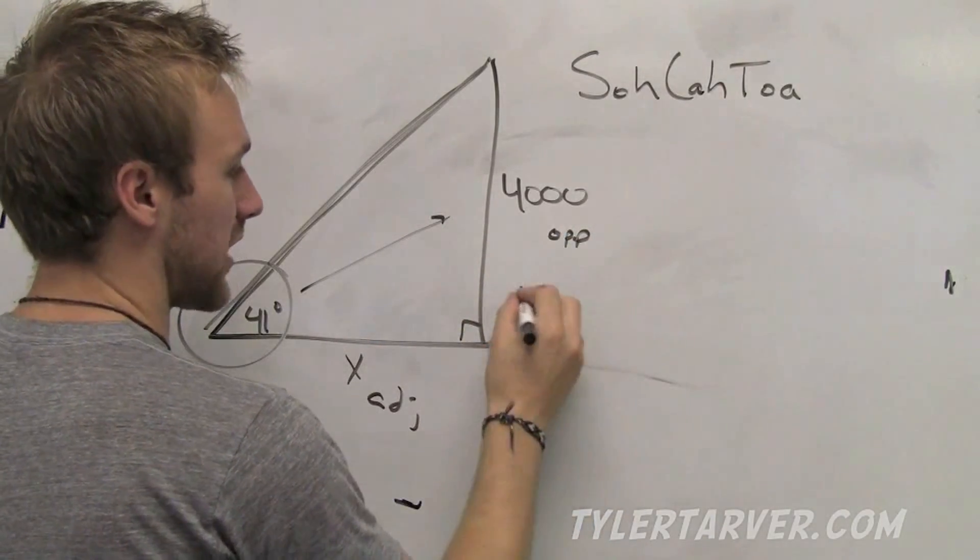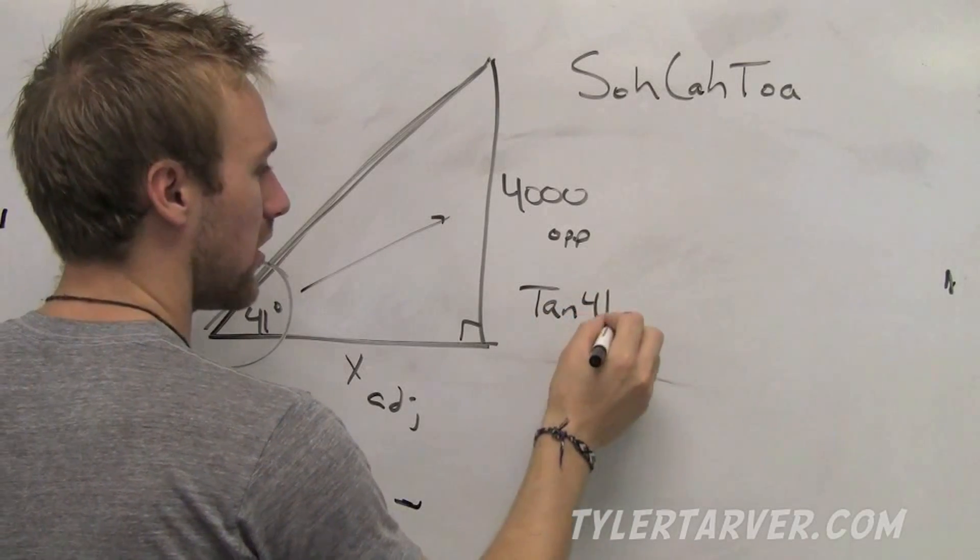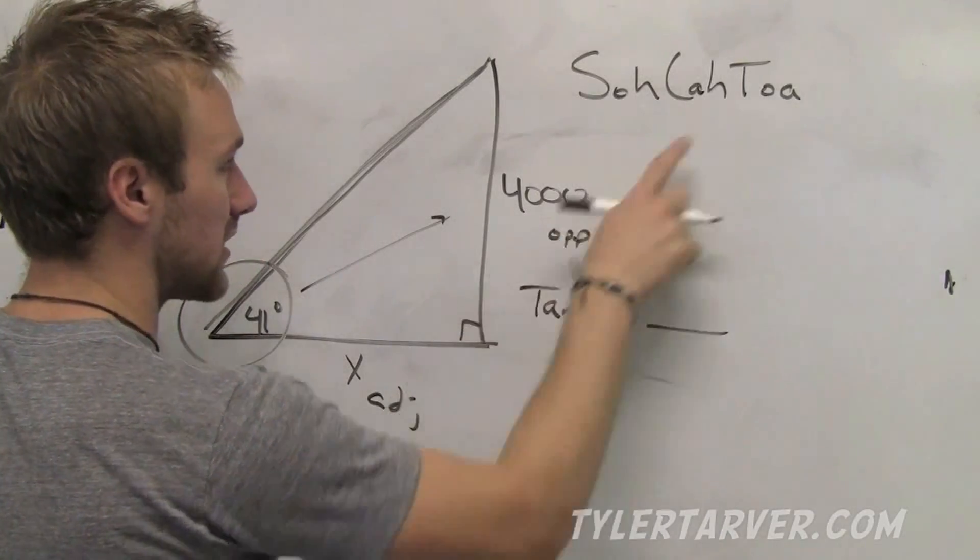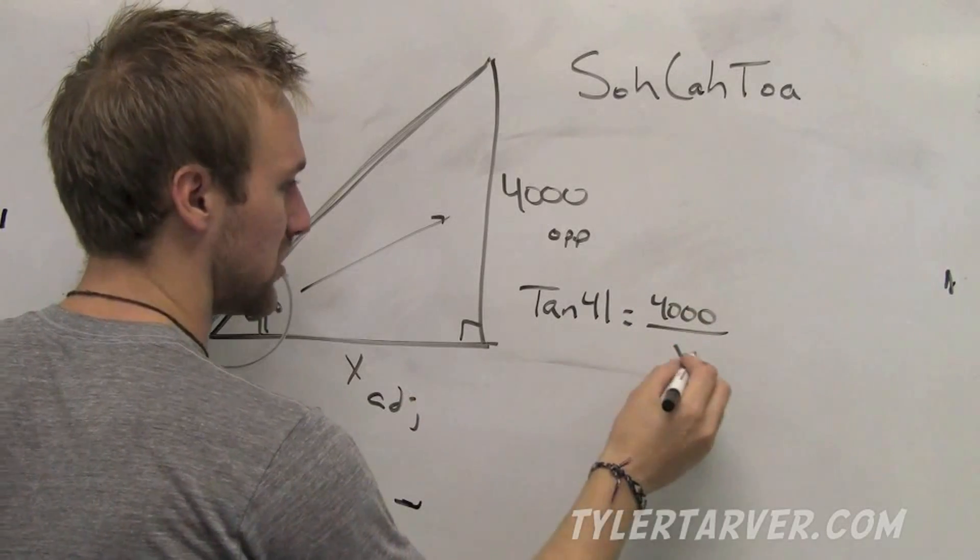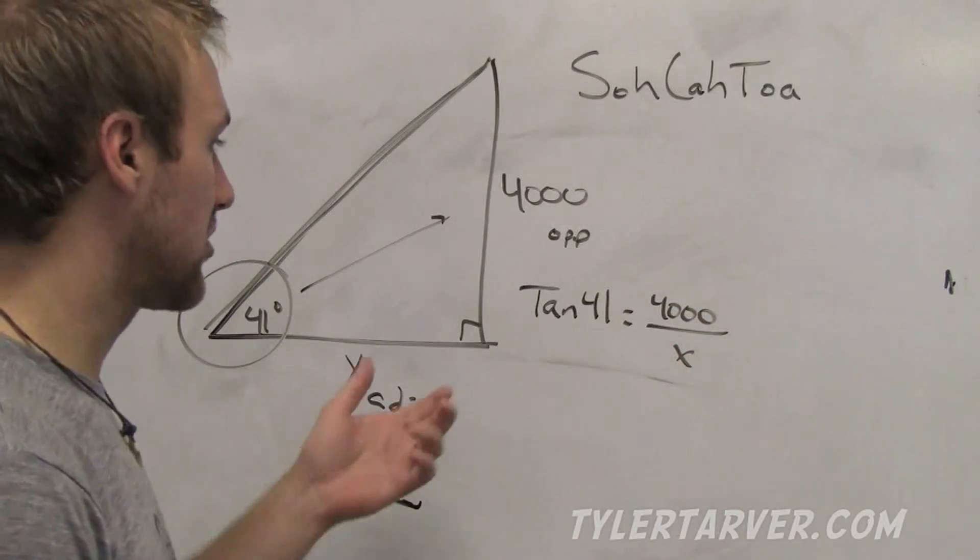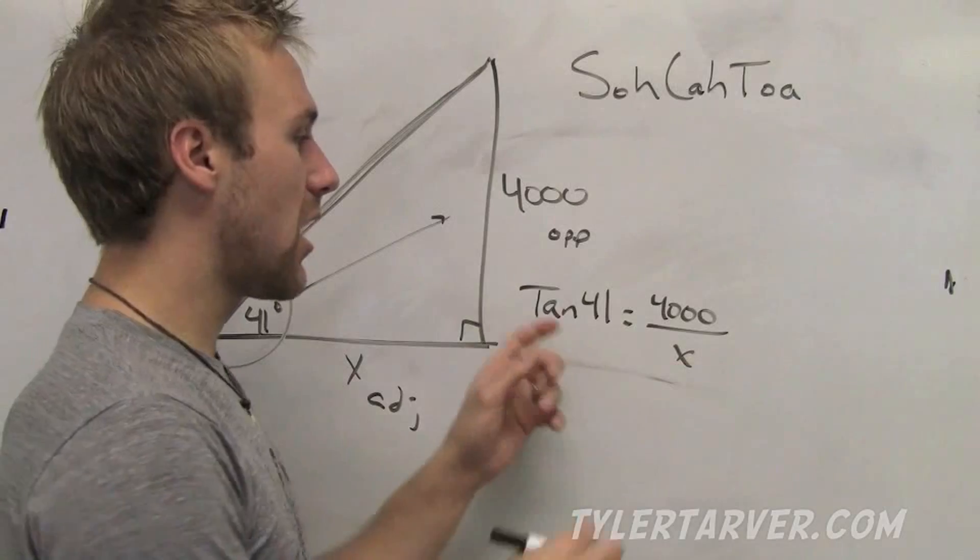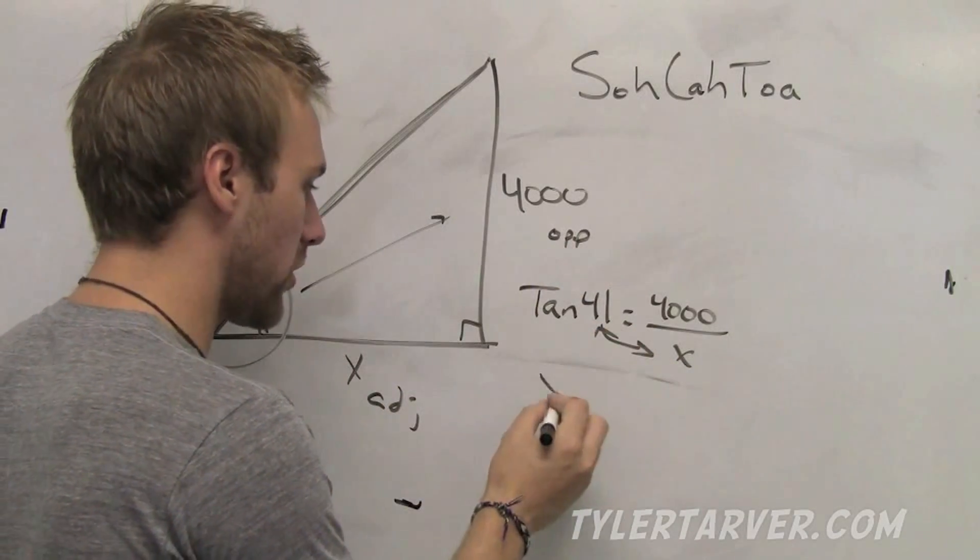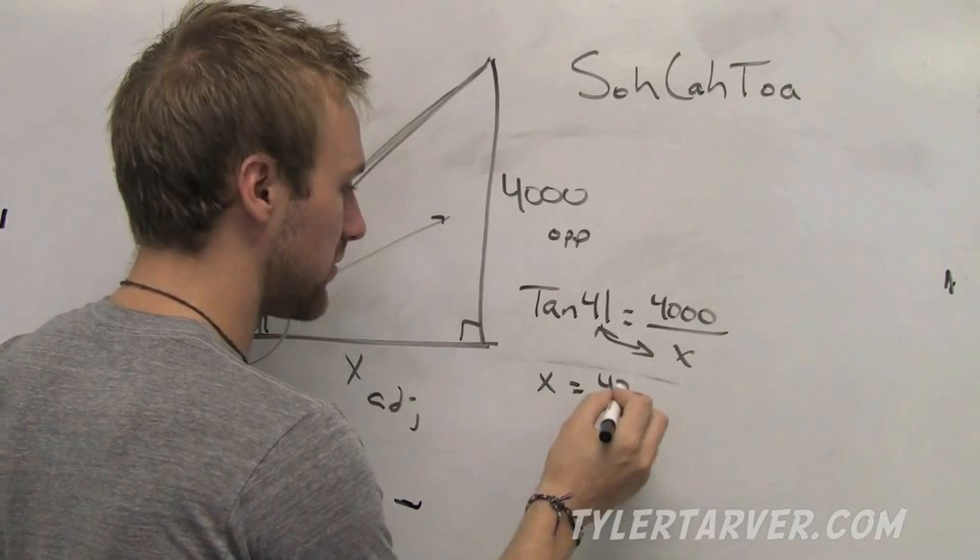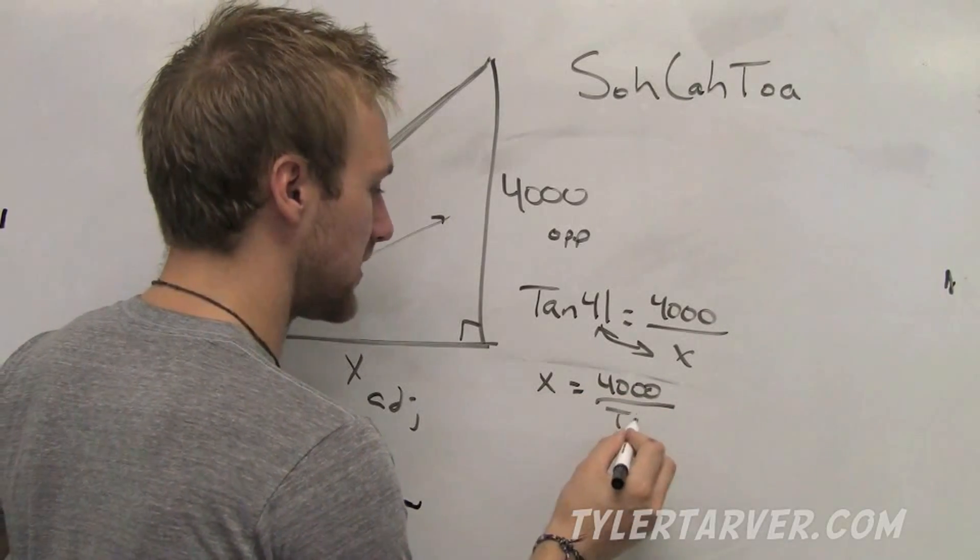It's the only one with the O and the A. So, tangent of 41 equals opposite, because it comes first, so it's on top. 4,000 over adjacent, which is X. Now, we know from the last section or two that if that variable's on the bottom, all you do is switch those two. A little switcheroo. X equals 4,000 divided by tangent of 41.